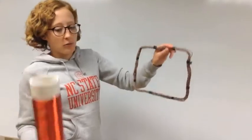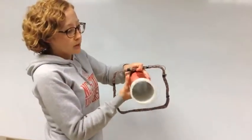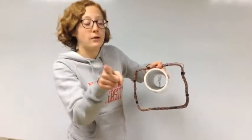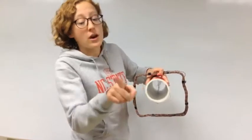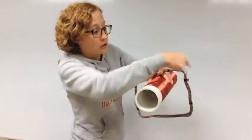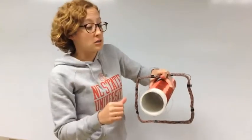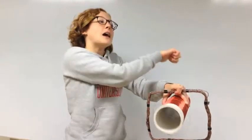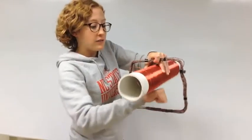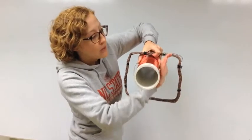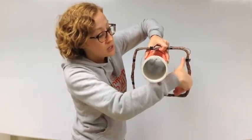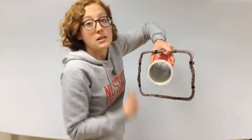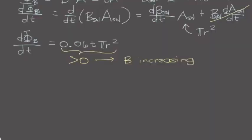Our solenoid has a magnetic field pointing out towards you, out of the screen, and it is increasing — strengthening in this direction. What we want is for the induced current in the rectangular loop of wire to oppose that increase. To oppose the increasing outward magnetic field, we induce a magnetic field that is into the screen. By the right-hand rule, this means we should have a current going clockwise around the rectangular loop of wire.